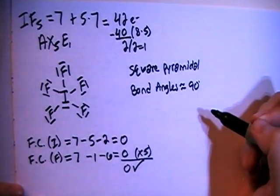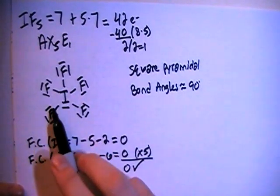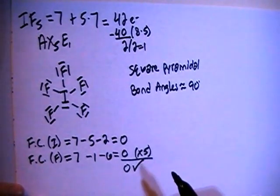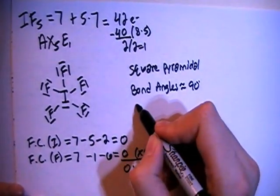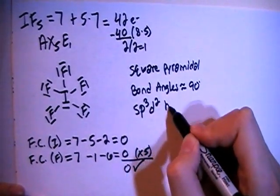In terms of hybridization looking at the central iodine here you have one, two, three, four, five, six different electron groups, which means we need six different hybrid orbitals so we're going to go with SP3D2 hybrid.